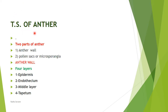Anther is the fertile part of a stamen. Filament and connective are not fertile parts — only the anther is fertile, where formation of microspores or pollen grains takes place. Internally, anther consists of two parts: anther wall and pollen sacs or microsporangia. If the anther is dithecous (two-lobed), it contains four pollen sacs — it is tetrasporangiate. If the anther is monothecous with a single lobe, it contains only two pollen sacs or two microsporangia.